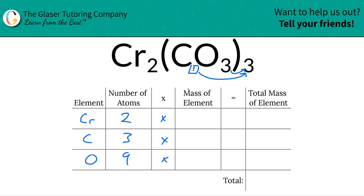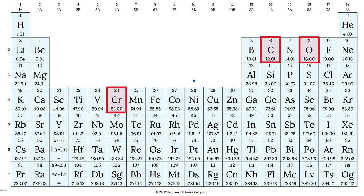Next, we're going to find the mass of the element. Where do we find it? Periodic table. Let's take a look. Chromium is 52, carbon is 12.01, oxygen is 16. Those represent the masses.